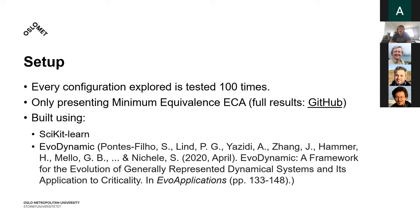The specifics of the setup is that every configuration explored is tested 100 times, every bar, every point of the line graph that you will see soon. I'm only presenting the minimum equivalence of elementary cellular automata, meaning the 88 rules that are representing their own group. The full results can be found on GitHub. We actually also found that some of the rules within the same group did not actually get the same performance, which was interesting to us. This is specifically built using Scikit Learn for the support vector machine, and I used something called Aerodynamics for the cellular automata.